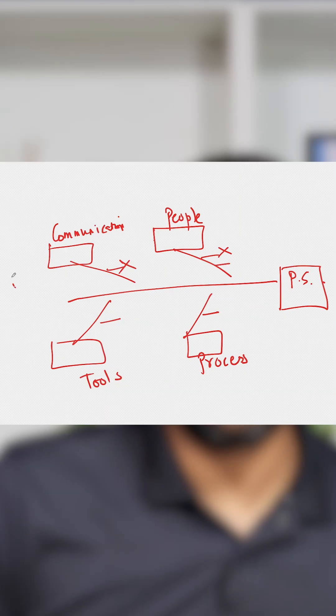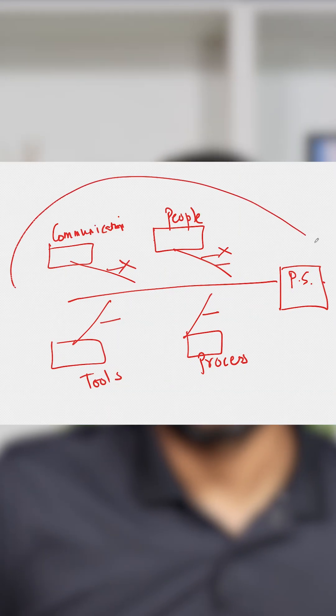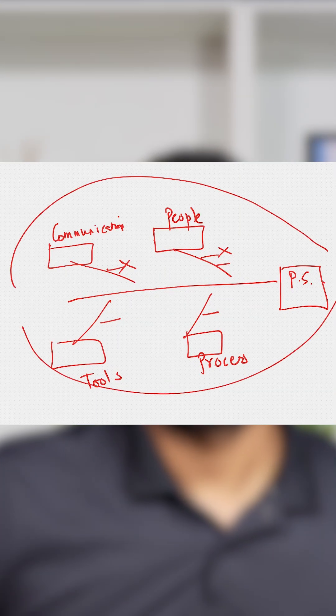Then you will be left with prioritized reasons because of which the problem would happen. Sit with the team and try to figure out the solution. And why is it called a fish bone diagram? Because it looks like a fish bone in general.